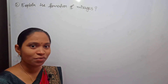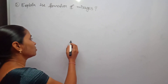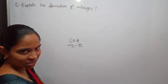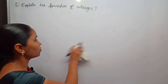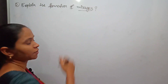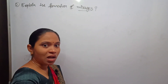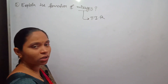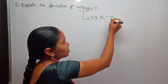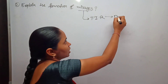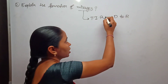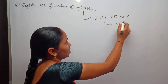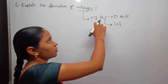Hello students, welcome to Swapna Physics Classes. In this lecture I am going to explain one more important short answer question for TES Intermediate Second Year IPE examination. The question is: explain the formation of mirages. Mirages are simply an illusion and these are formed due to total internal reflection. Total internal reflection is possible only when the light ray travels from the denser medium to the rarer medium, and whenever the angle of incidence is greater than the critical angle.